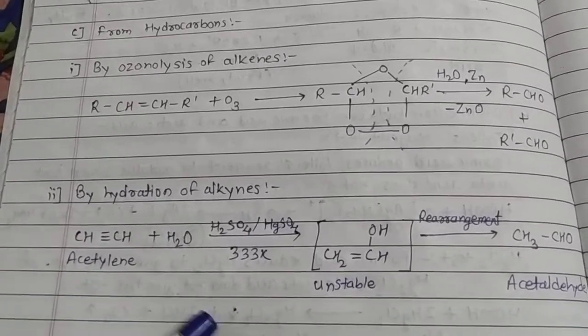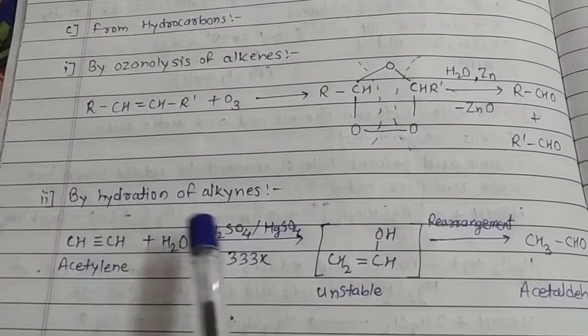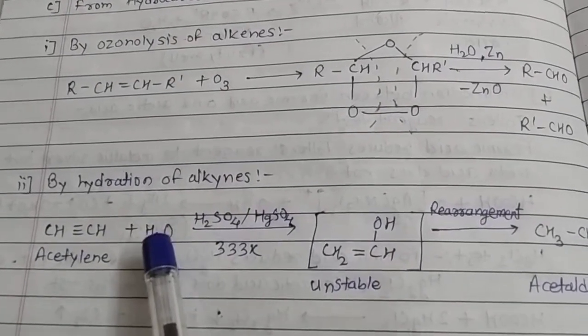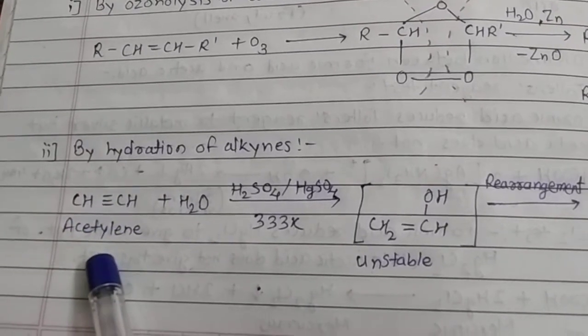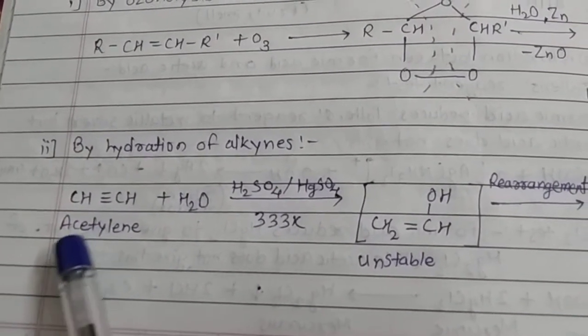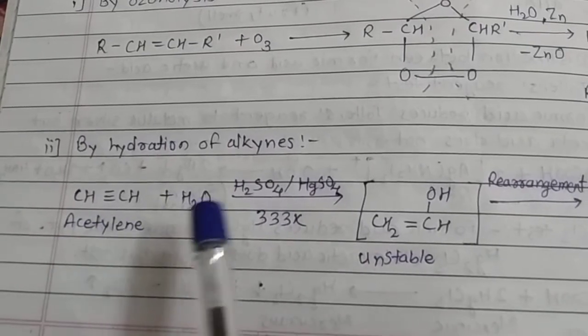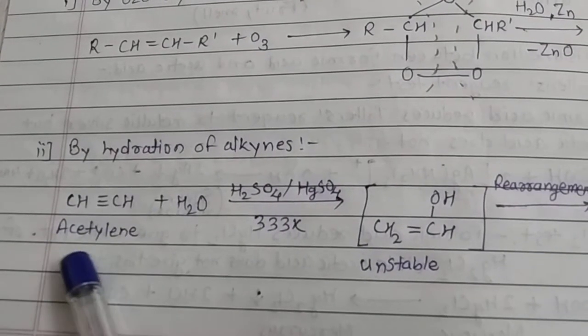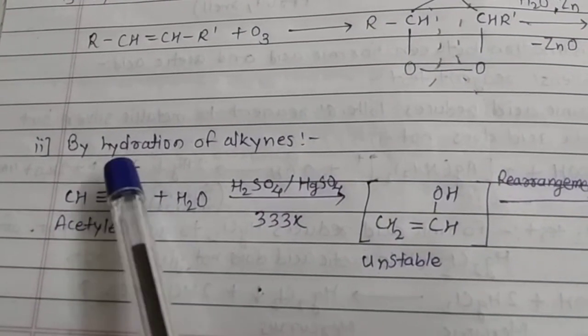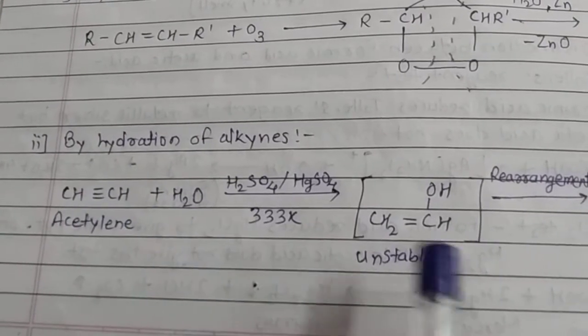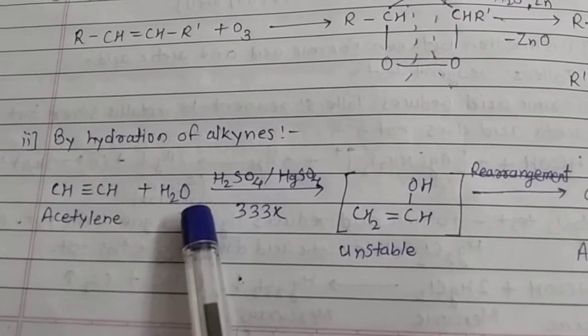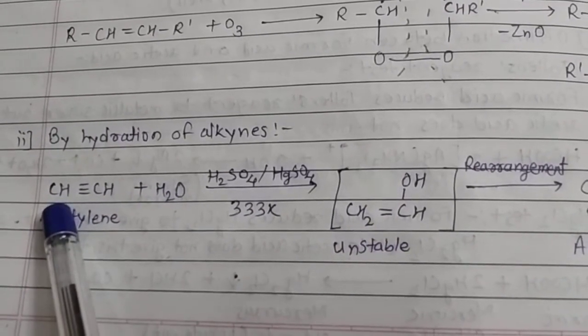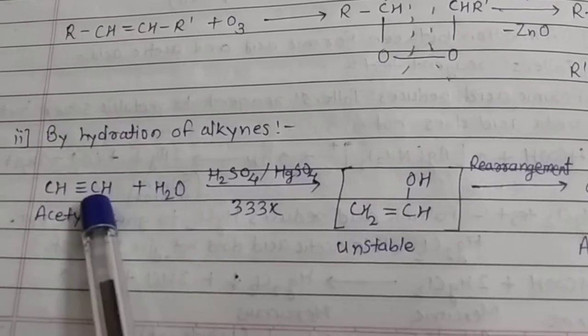Next is hydration of alkynes. Alkynes are hydrated with water. In acetylene, in double and triple bonds, there is one sigma bond and pi bonds. Pi bonds are always weaker than sigma bonds. In acetylene there is one sigma bond and two pi bonds. Those pi bonds are easy to break. Addition reaction happens here in hydration of alkynes. One hydrogen gets added to one carbon and the remaining OH gets added to the other carbon.